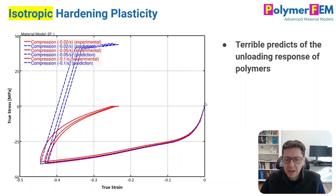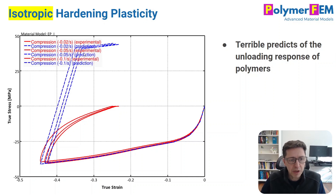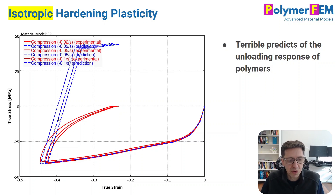The problem is that you can capture the monotonic response very well since you piecewise fit to it, but the unloading response you can't fit. The red curves here show experimental data for ultra high molecular weight polyethylene — polyethylene with really long molecules — and the unloading predictions are terrible. Isotropic hardening plasticity should not really be used if you have unloading or cyclic loading, as it has a very odd unloading response where reverse plasticity occurs at the same stress magnitude as the initial loading.